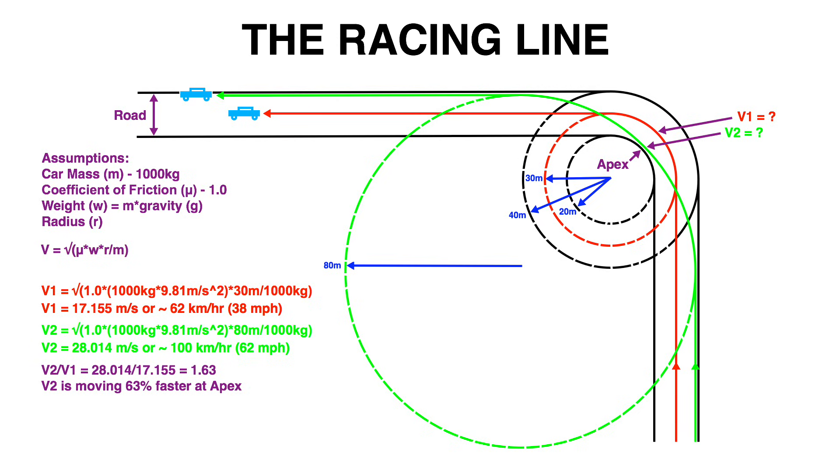So as you can see taking the racing line improved the velocity of the vehicle at the apex by 63 percent. It's now obvious why you would want to take the racing line.